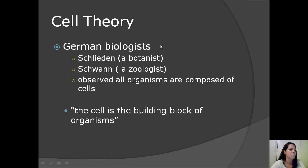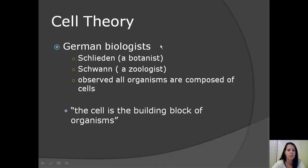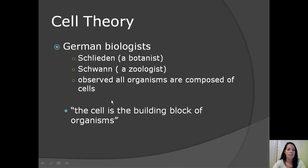As the microscopes improved, more parts of the cell could be viewed. In the 1830s, two German biologists came to the same conclusion, even though neither of them were working with one another — they were working completely independently in different laboratories. The idea they came up with was that all organisms they studied under the microscope were composed of cells. This idea was transformed into a general statement for the cell theory: the cell is the building block of organisms.